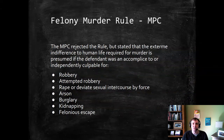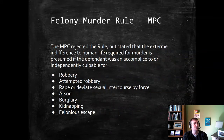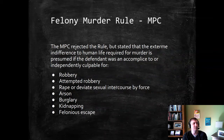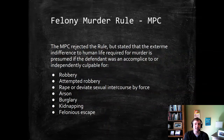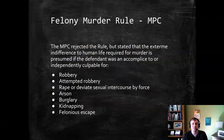This is not technically a felony murder rule, but some people refer to it as the MPC's version. The MPC stated that extreme indifference to human life — which was in the second theory of murder under the MPC — is presumed if a defendant was an accomplice or independently culpable for one of these listed crimes: robbery, attempted robbery, rape or deviant sexual intercourse by force, arson, burglary, kidnapping, and felonious escape. If the crime is not on that list, that's it — it doesn't extend to all felonies. And it's not automatic guilt; it's a presumption that reckless indifference to human life exists if a person is committing or is an accomplice to one of these crimes.